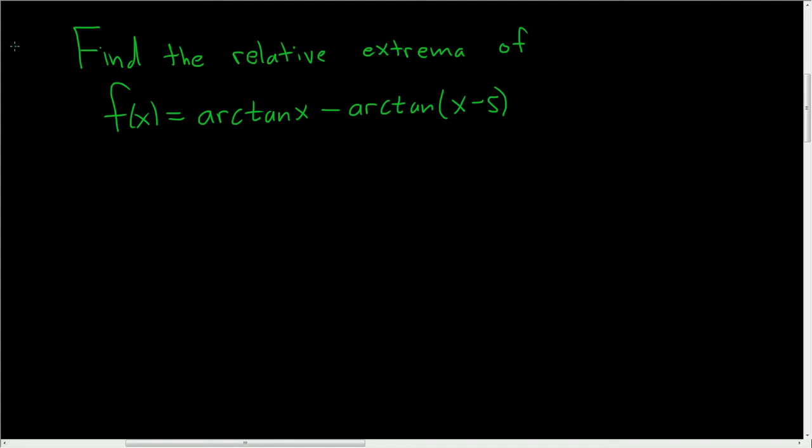Find the relative extrema of arctan(x) minus arctan(x-5). Let's go ahead and do it, and we'll use the first derivative test. So we'll start by first finding the critical numbers. So we'll take the derivative, and we'll set it equal to 0.